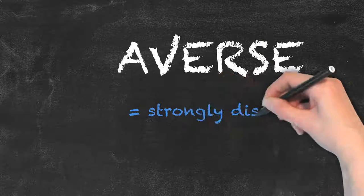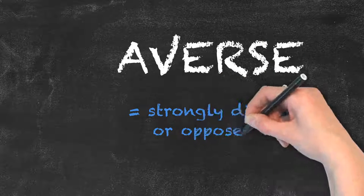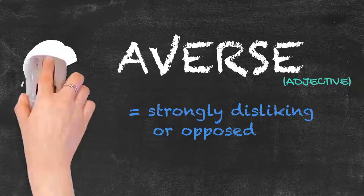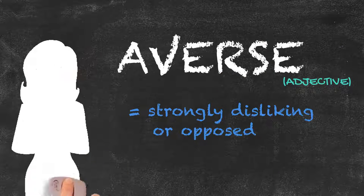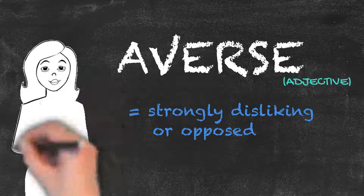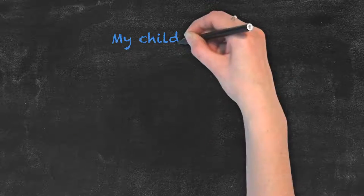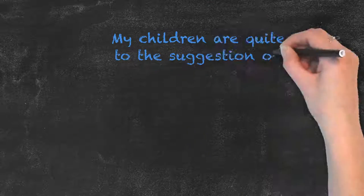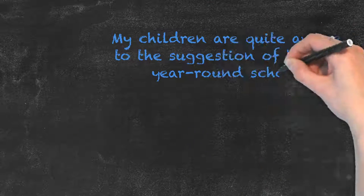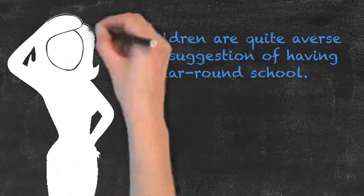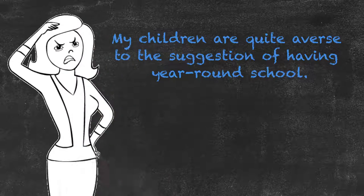Averse is also an adjective, but means strongly disliking or opposed. For example, my children are quite averse to the suggestion of having year-round school.